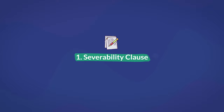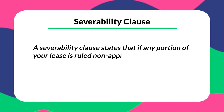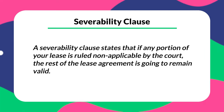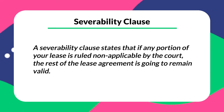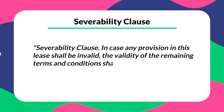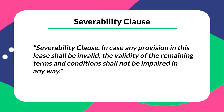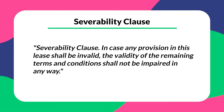First is the severability clause. This is the most important clause and you must include it in your documents to avoid future issues with your lease. A severability clause states that if any portion of your lease is ruled non-applicable by the court, the rest of the lease agreement is going to remain valid. If you don't include a severability clause, you may be exposed to getting the entire contract invalidated by the court. An example would be: 'In case any provision in this lease shall be invalid, the validity of the remaining terms and conditions shall not be impaired in any way.'